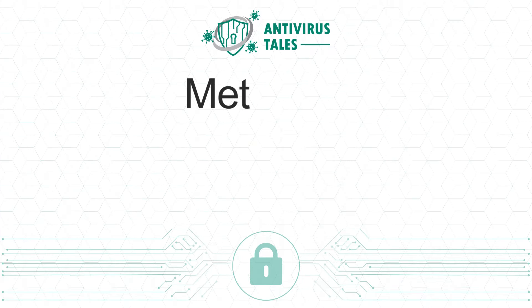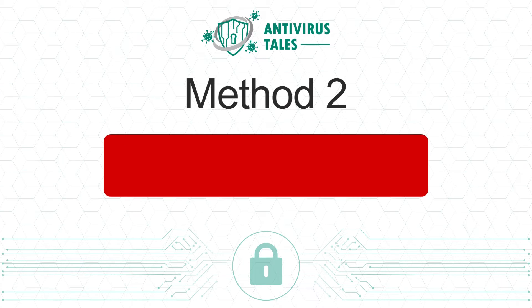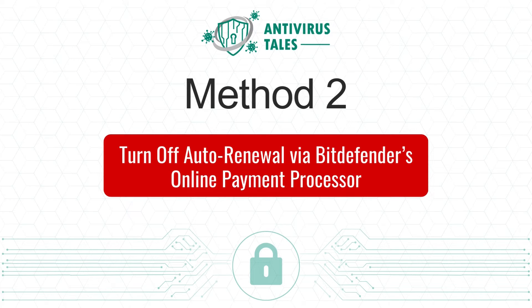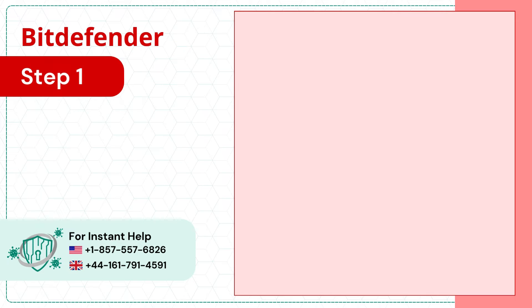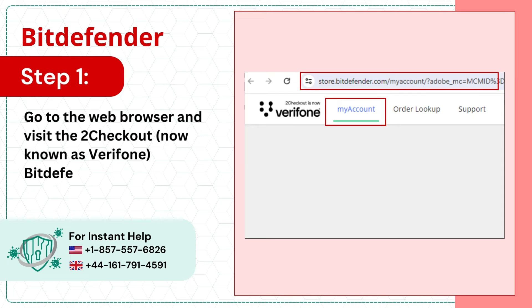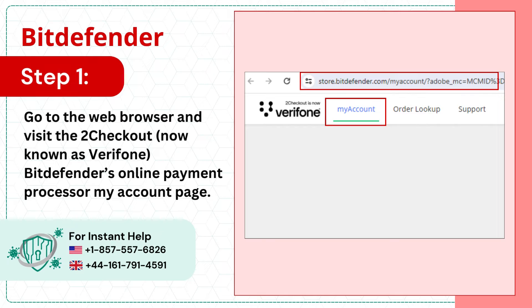Method 2: Turn off auto renewal via Bitdefender's online payment processor. Step 1: Go to the web browser and visit the 2Checkout, now known as Verifone, Bitdefender's Online Payment Processor My Account page.